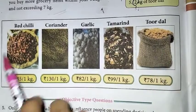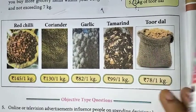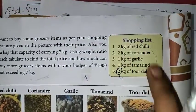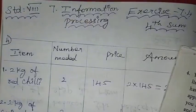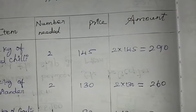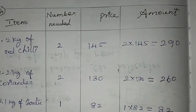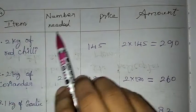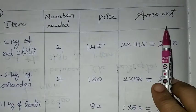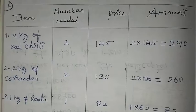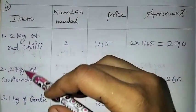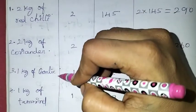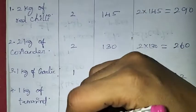Now let's put the price list in this table. First, let's put 2kg of red chili, 2kg of coriander, 1kg of garlic, and 1kg of tamarind in the shopping list.